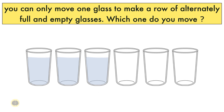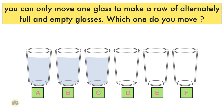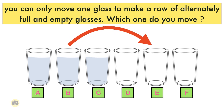Let's name the glasses A, B, C, D, E, F — where A, B, C are full and D, E, F are empty, placed in a row. The important point is that the puzzle says you can only move one glass, but there are no restrictions on what operations can be performed on that glass. So, move the full glass B, pour all its contents into glass E, then put the now-empty glass B back in its original position.